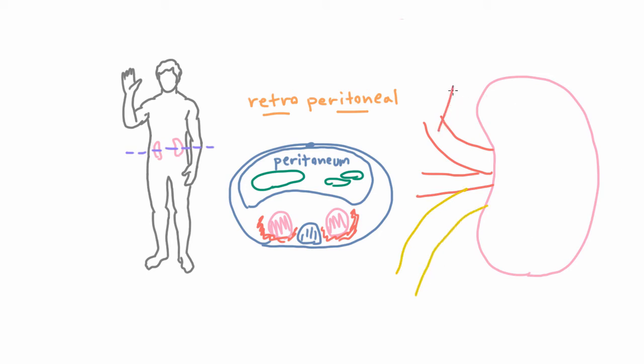The first thing we have is the renal artery. And that brings blood to the kidney. And it comes directly off of the aorta. So if this is our aorta, one renal artery comes off each side of the aorta to go to each kidney. So this would be the aorta.